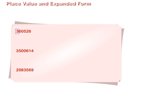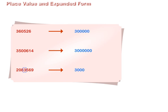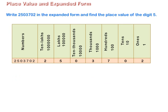The place value of 3 in 3,60,526 is 3,00,000. The place value of 3 in 35,614 is 30,000. The place value of 3 in 20,83,569 is 3,000. Let us now write 25,03,702 in the expanded form and find the place value of the digit 5.